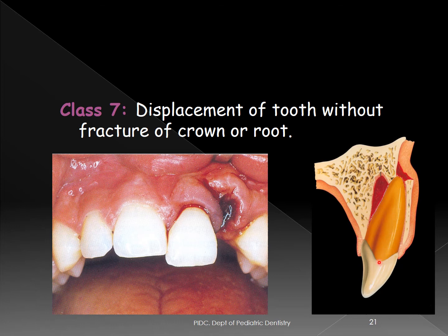Class VII is displacement of the tooth without fracture of the crown. The crown and root are intact, but the tooth is displaced — labially, lingually, or palatally. In this situation, the alveolar process may get fractured and the root may become wedged between the two bony plates, making it very difficult to reposition.